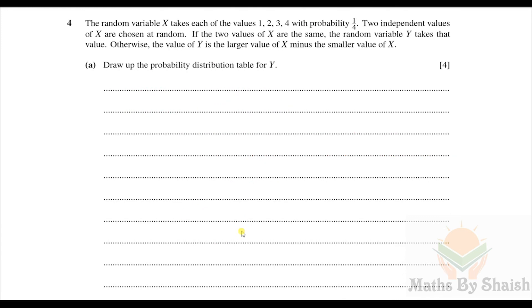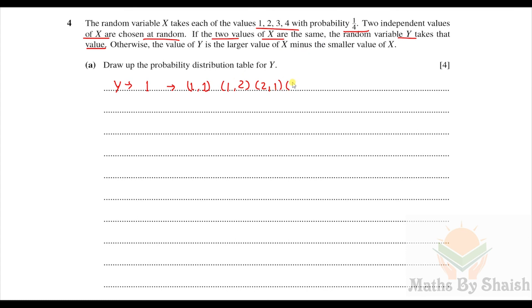Question four: the random variable X takes each of the values 1, 2, 3, 4 with probability 1/4. Two independent values of X are chosen. If the two values are the same, Y takes that value; otherwise Y equals the larger value minus the smaller value. Draw up the probability distribution table for Y. For Y = 1: pairs are (1,1), (1,2), (2,1), (2,3), (3,2), (3,4), (4,3).